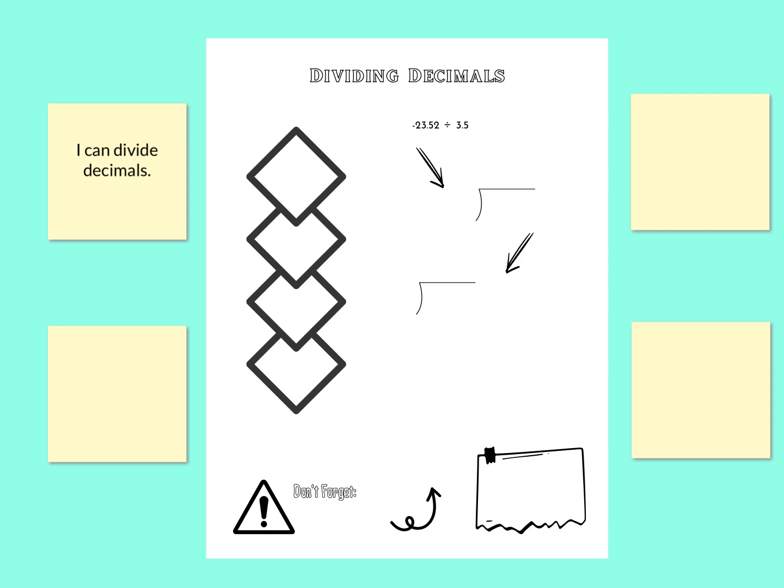The first thing we need to remember is to set this up. We put the 23.52 on the inside. Just like when we were multiplying, I'm not going to worry about the signs until I'm at the end. So I'm just going to leave it positive. We're dividing by 3.5.